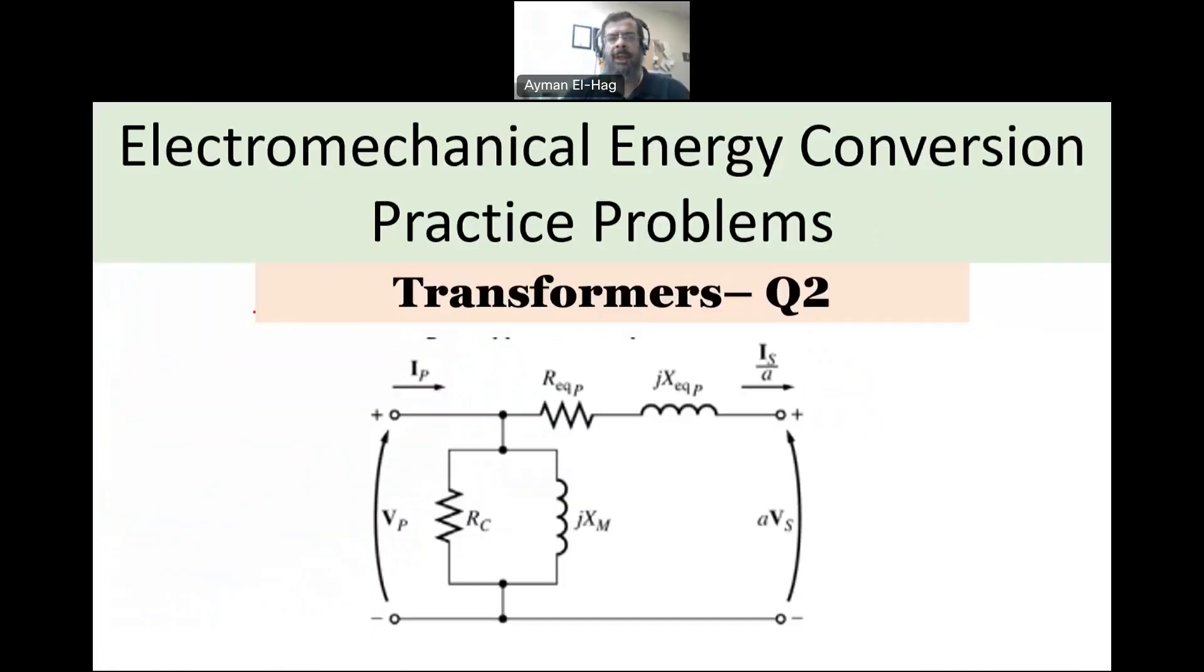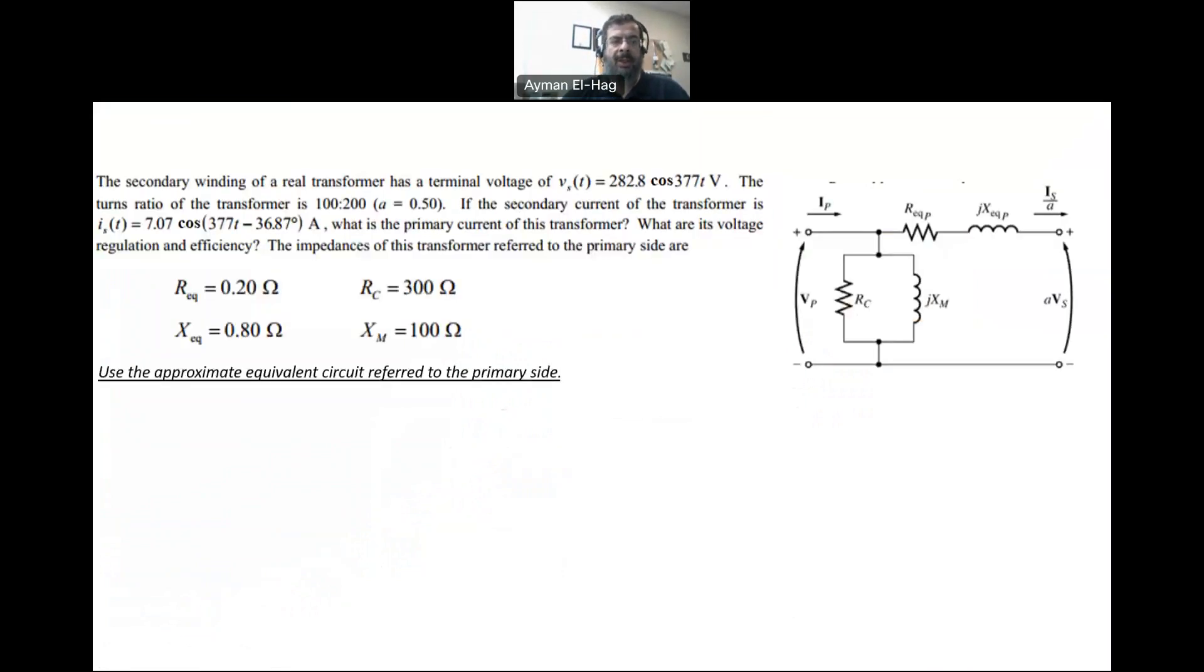Hello everyone, and welcome to this series of practice problems about electromechanical energy conversion. This is the second question about transformers. The question says that the secondary winding of the transformer has a terminal voltage, and the secondary current of the transformer is given to us as a time domain value.